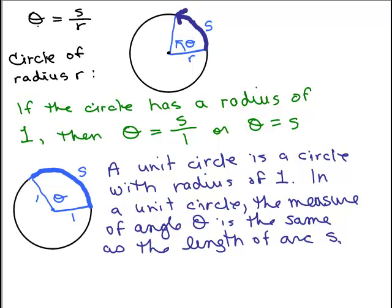We defined the radian measure theta, not in degrees, it's now in radians, it's a real number, to be this arc length divided by the radius.